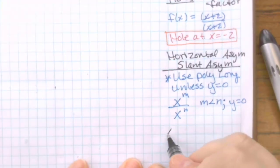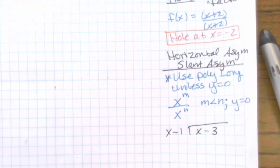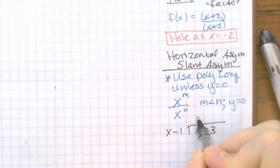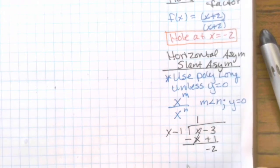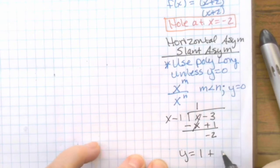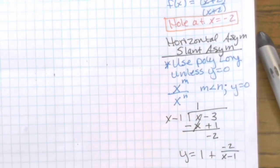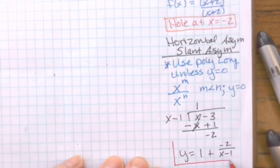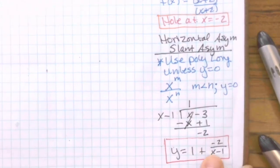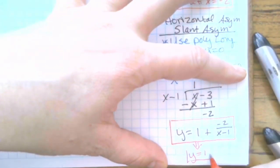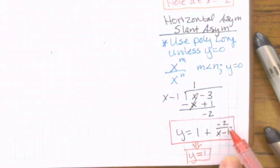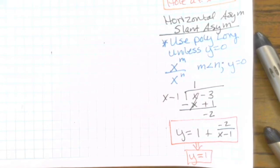We actually do need to do the long division here. So we take x minus 1 and divide it into x minus 3. X goes into x one time. 1 times x is x; 1 times negative 1 is negative 1. Change the signs. We get y equals 1 plus a remainder of negative 2 over the divisor x minus 1. So that is our horizontal asymptote. Since the fraction has a number on top but a letter on the bottom, when we graph we disregard it and use y equals 1. In pre-calculus, we generate the fraction to practice that skill.